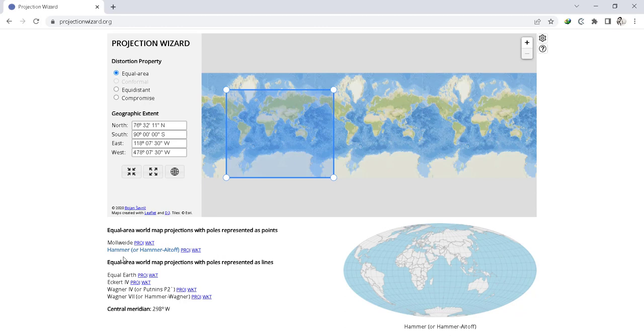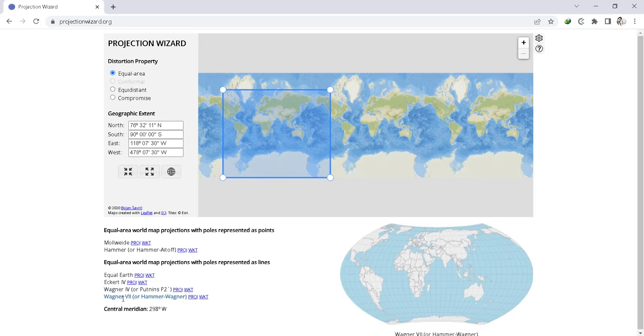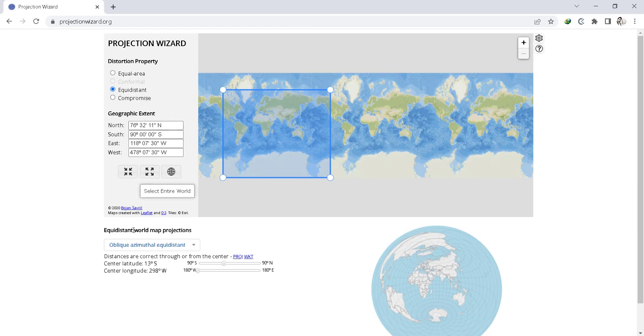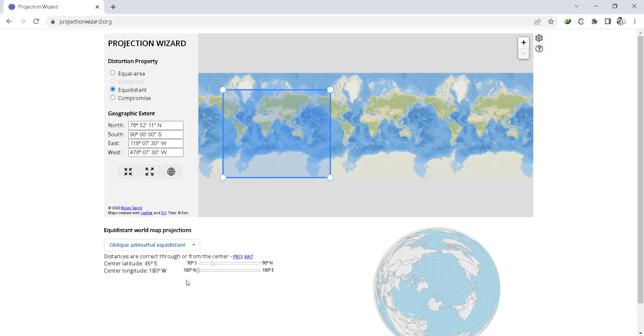In equal area, we get these types of options. If we select equidistant, we get equidistant world map projections with oblique azimuthal equidistant, and we can adjust the center latitude and center longitude according to our requirements.